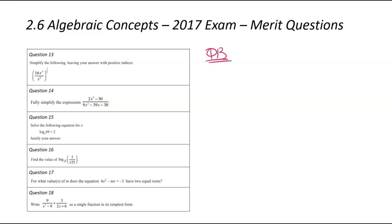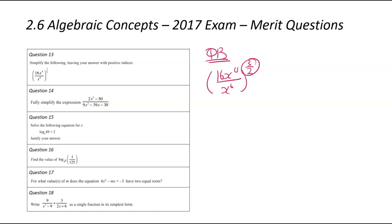Question number 13. We've been asked to simplify that particular expression. When you're dealing with powers, just a reminder that fractions and negative powers are never really simple — it's your job to simplify them into whole numbers, positive indices. So I've got a power outside a bracket with a fraction in the middle. I'm going to start by expanding the bracket, so that's going to be 16x to the power of 4, and all of that is going to be to the power of 3 over 2.